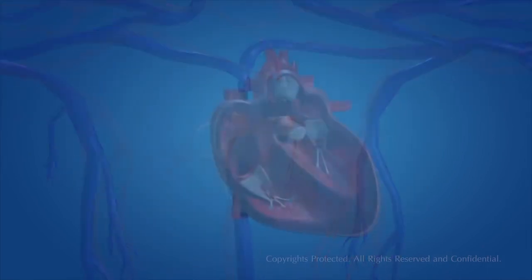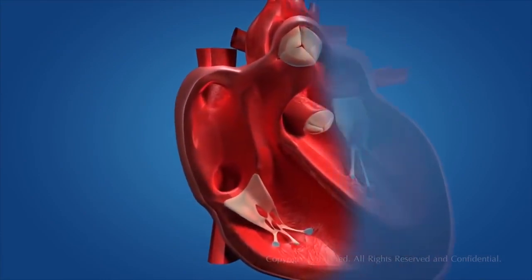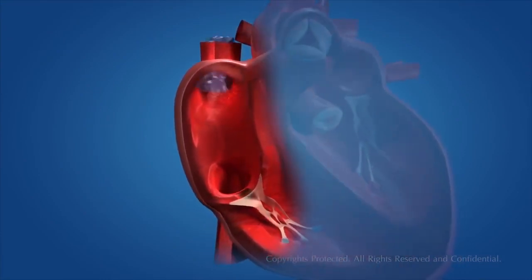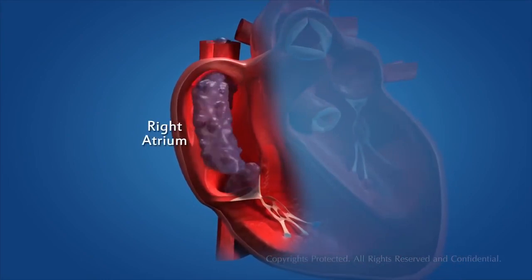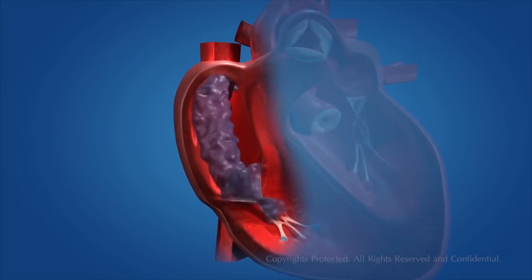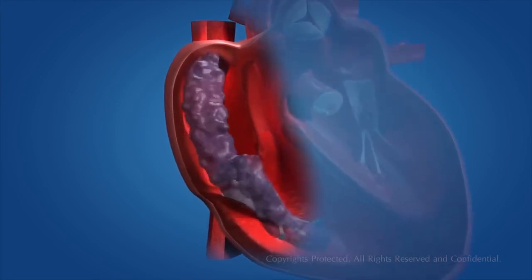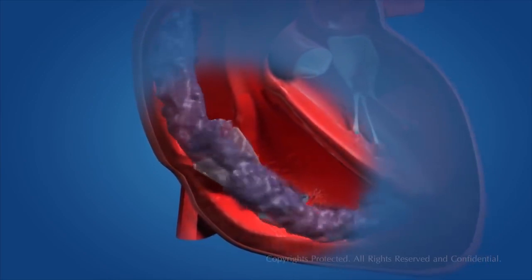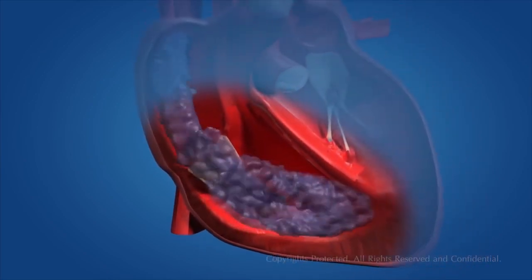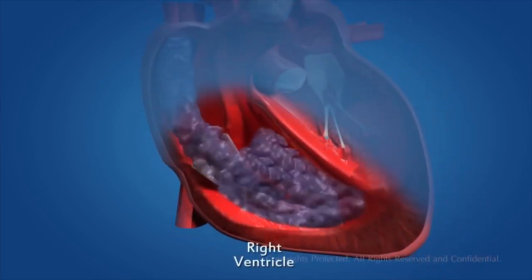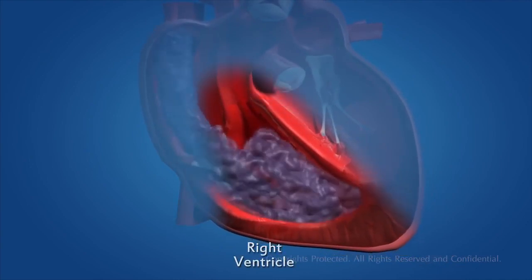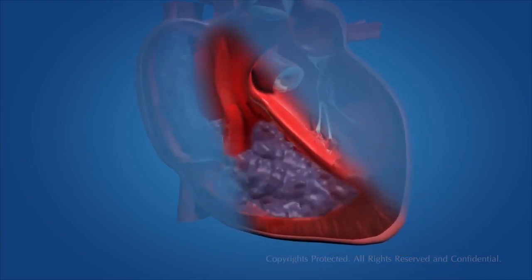The deoxygenated blood from different parts of the body enters the upper right chamber of the heart, which is called the right atrium. The right atrium gets contracted, allowing the blood to flow into the right ventricle, which expands as the right atrium contracts, through the one-way valve. The right ventricle then contracts, pushing the blood into the pulmonary artery.